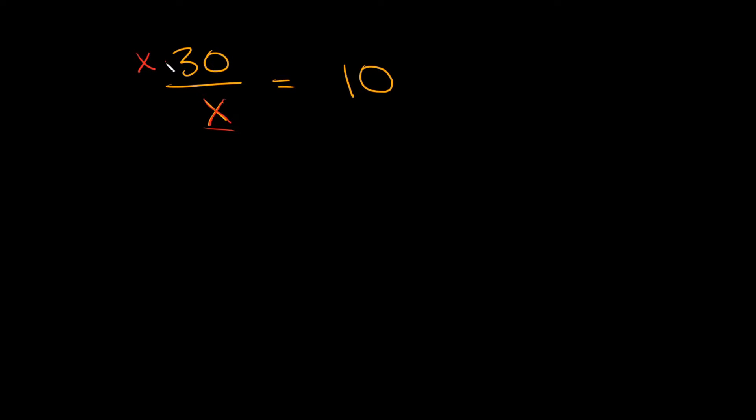So we're gonna multiply by x up here. But remember, this is the important part: what you do to one side you do to the other. So if we multiply by x over here, we also have to multiply by x over here.